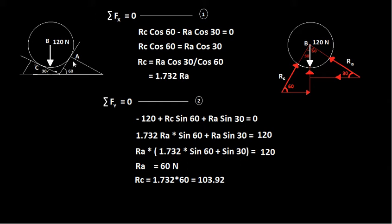There will be two reactions at A and C acting against the mass of the body. To analyze this problem, a free body diagram is created showing the body weight of 120 N acting downwards and the reactions at C and A indicated with lines.